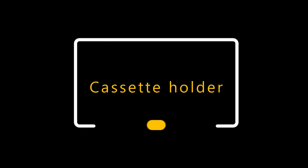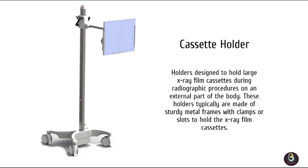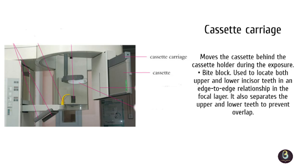Cassette holder: has a metal sheet at the front that prevents scattered X-ray photons from reaching the cassette, which would otherwise degrade the image. There is a narrow vertical slot in the holder directly opposite the X-ray source, ensuring that only a small amount of the film is exposed at one time. Cassette carriage: moves the cassette behind the cassette holder during the exposure.